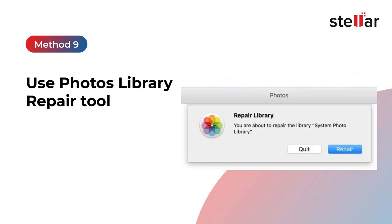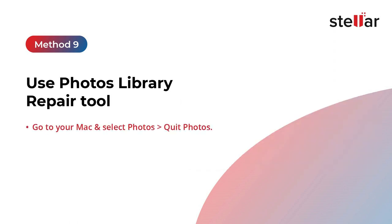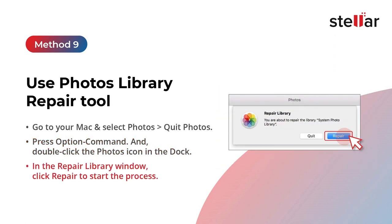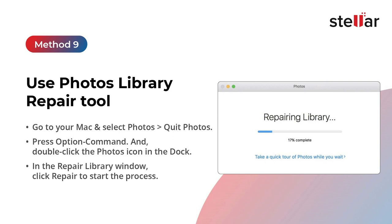Method 9: Use Photos Library Repair Tool. You can fix corruption issues on iPhone Photo Library by using the Repair Library feature on Mac. It scans the app's database and repairs the corruption. Go to your Mac, select Photos and Quit Photos. Then press Option + Command and double-click the Photos icon in the Dock. In the Repair Library window, click Repair to start the process. This may show all the photos.